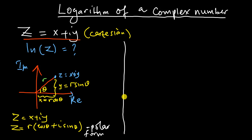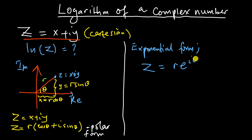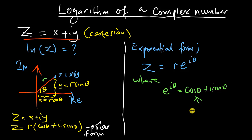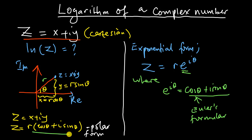There's one more thing we can do — we can also write the complex number in exponential form. In that case we write it as z equals r times e to the power of i theta, where e to the i theta is the same as cosine theta plus i sine theta. This is Euler's formula. Substituting it back gives us the polar form, which can take us back to the Cartesian form.